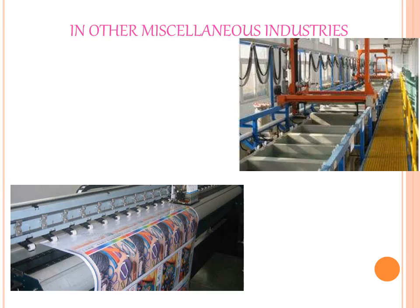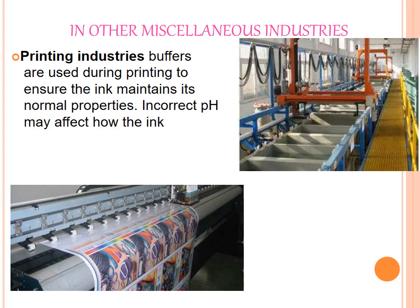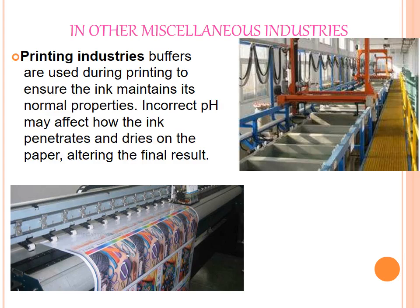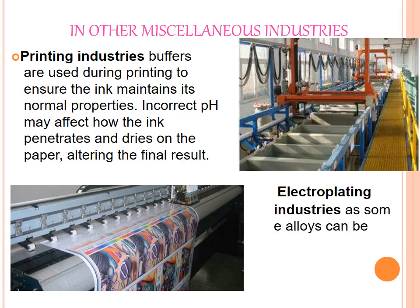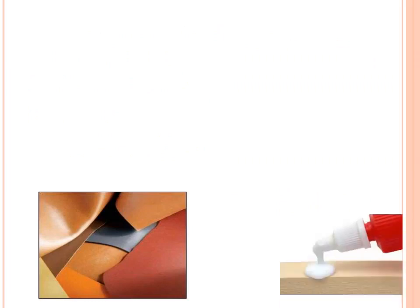In other miscellaneous industries like printing industries, buffers are used during printing to ensure the ink maintains its normal properties. Incorrect pH may affect how the ink penetrates and dries on the paper, altering the final result. Buffers are also used in electroplating industries, as some alloys can only be plated if very strict pH control is maintained by the buffer solution.